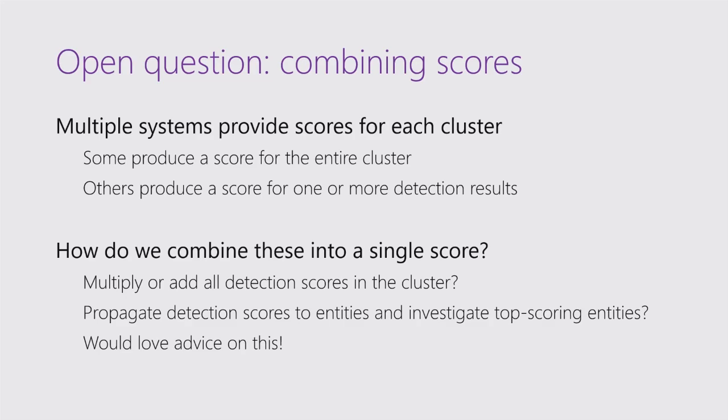Finally, last slide: I don't know how to combine all of those scores on a given cluster. I might have one scoring mechanism that says this cluster has three things in different parts of the kill chain — giving it one score. Another says this asset is very high value to the business — promote that. Something else says that registry key gets touched all the time — downvote that. How should I incorporate those individual detection boosts and sinks and the overall kill chain progress score? I know there's somebody in the audience who can help me with this. I'd love to chat with you afterwards. And that's it for me — thank you.